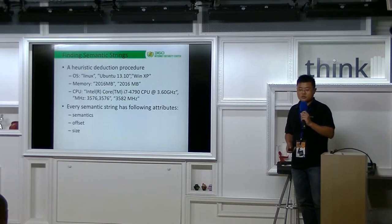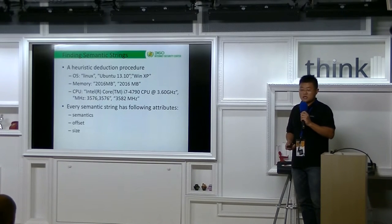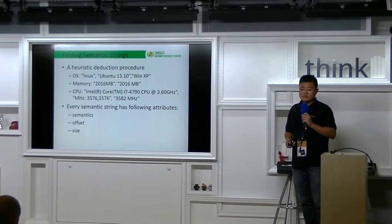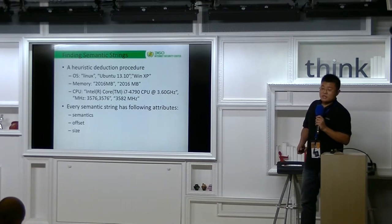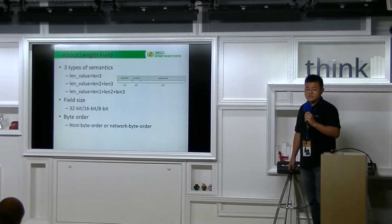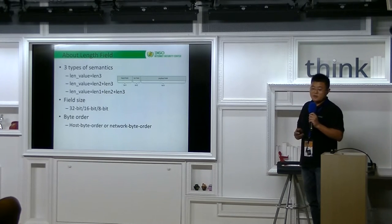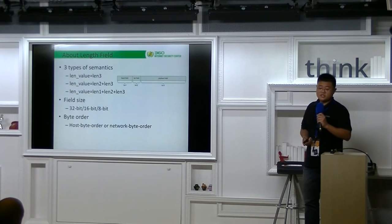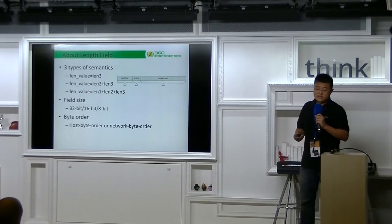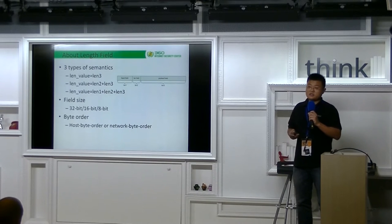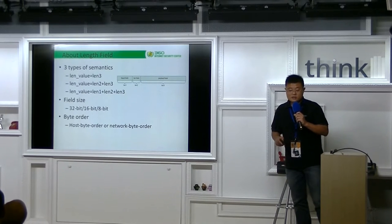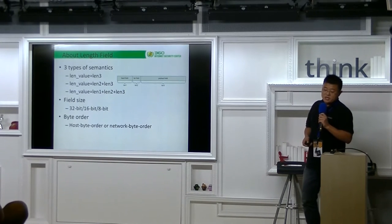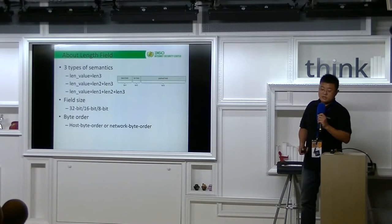Currently, we use a heuristic deduction procedure to find out the semantic strings. The frequent encodings of common semantic strings are concluded. Every semantic string has the following attributes: semantic offset and size. It's common that a length field is used in message to indicate how many bytes the message has. We concluded three types of semantics, as shown in the figure. The first is length value equals to length three. The second is length value equals to length one plus length two. The third is length value equals to length one plus length two plus length three. And the length field may have different field size. Currently, we consider three cases. And it may be placed in different byte order, host byte order or network byte order.